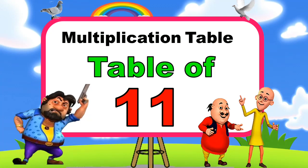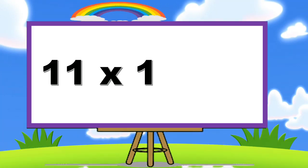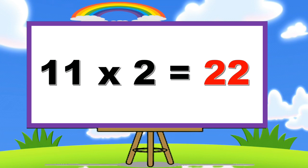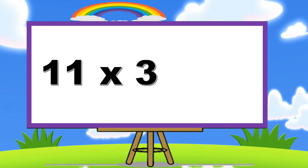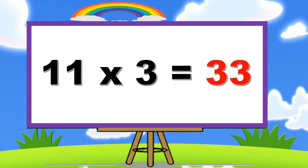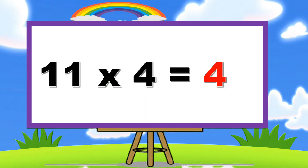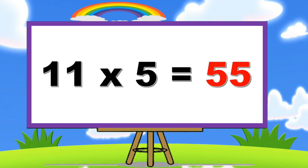Table of eleven. Eleven one's is eleven. Eleven two's is twenty-two. Eleven three's is thirty-three. Eleven four's is forty-four. Eleven five's is fifty-five.